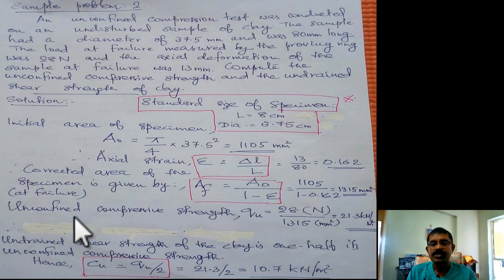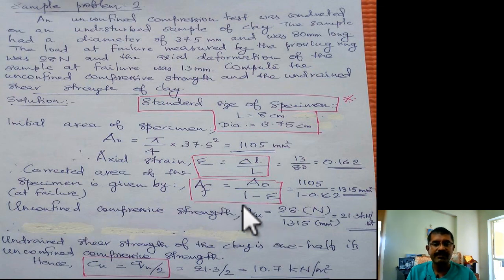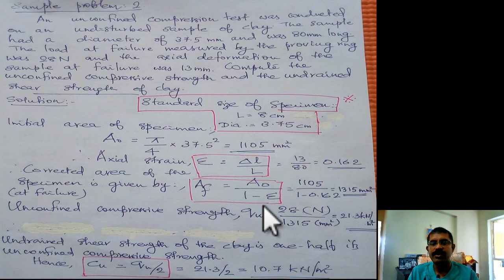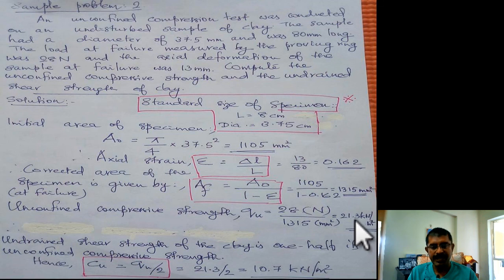The unconfined compressive strength can be easily found out, expressed by qu. The load on proving ring is given in the question, 28 Newton divided by 1315 millimeter square. So it turned out to be 21.3 kilo Newton per meter square.